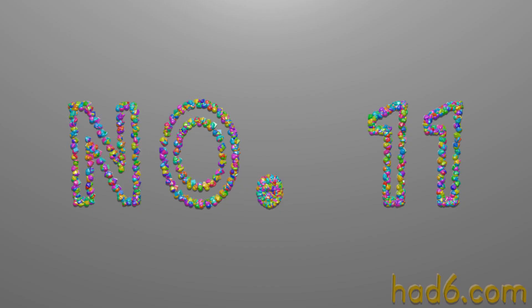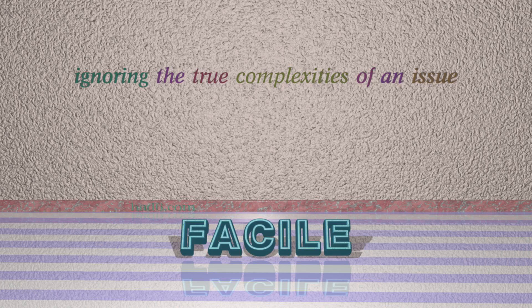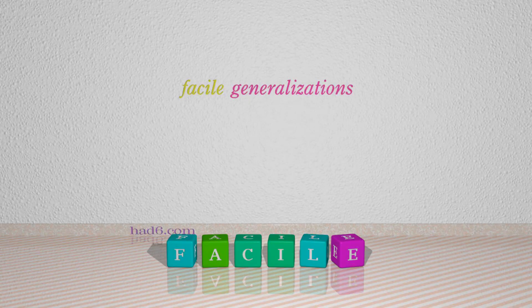Number 11: Facile. Which means ignoring the true complexities of an issue. For example: facile generalizations.